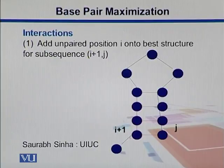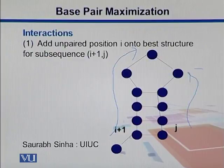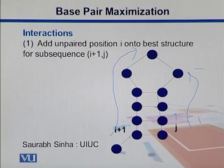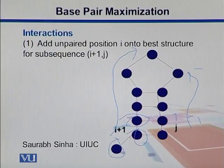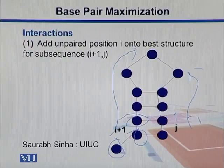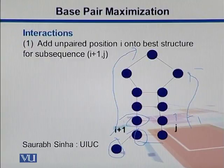We have this whole sequence and we start with two pointers: i increments forward as i+1, i+2, and so on, whereas j goes in a descending fashion — j, j-1, and so on. In this case, we try to pair i with j, but if they do not pair, we leave i unpaired and try to pair i+1 with j, which is adding this unpaired position i into the best structure.